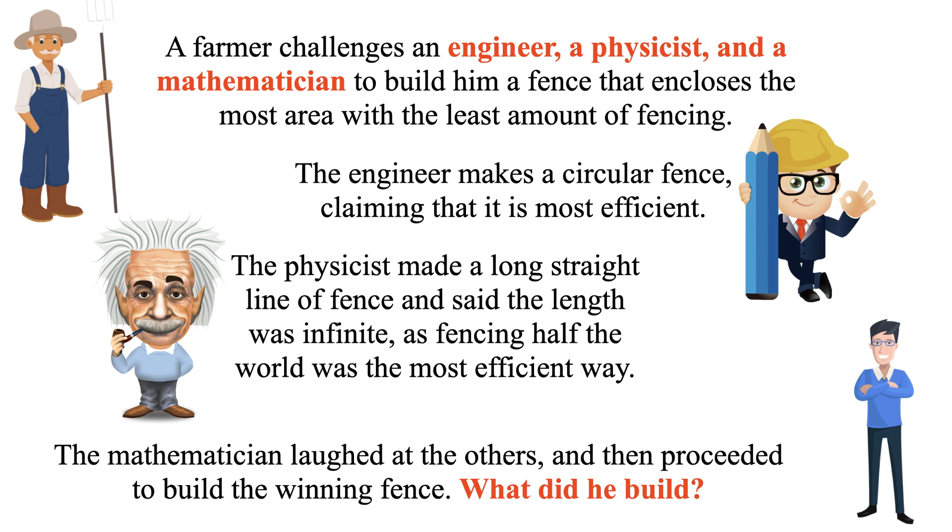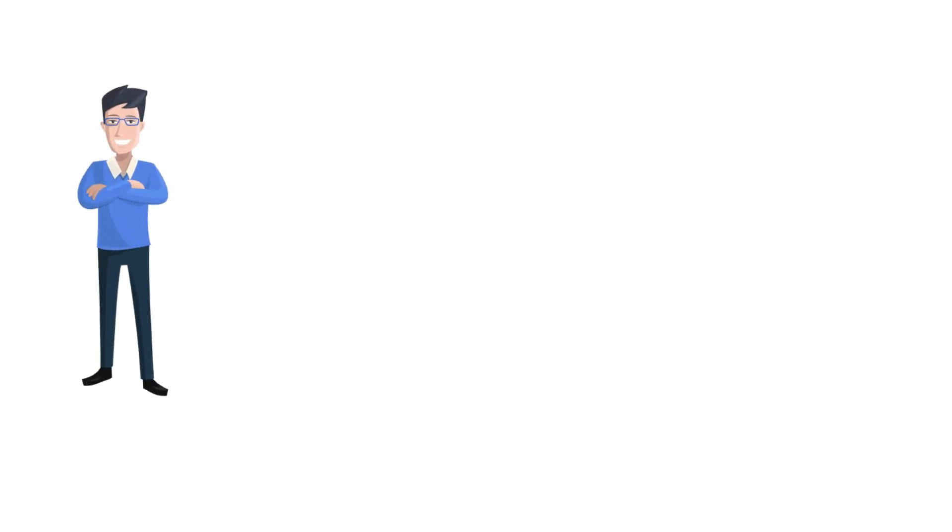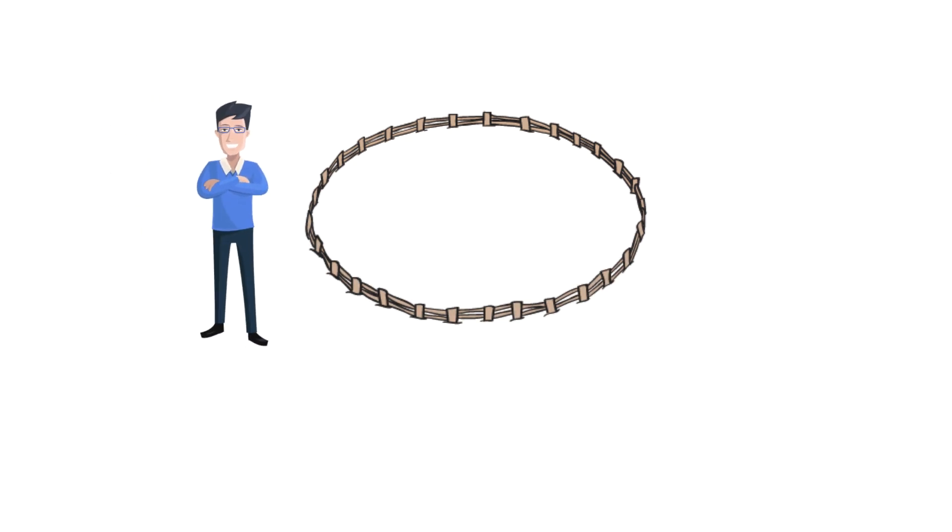Let me explain the solution now. Remember, this is a riddle in the traditional sense—try to think outside the box. The solution is the mathematician builds a small circular fence around himself and declares himself on the outside.